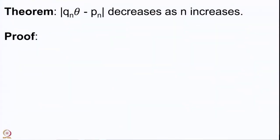So the real number θ can be expressed in terms of the complete quotient θₙ₊₁ using Pₙ, Pₙ₋₁, Qₙ, and Qₙ₋₁. This is something we will need when we go to the next result, which is that |Qₙθ - Pₙ| decreases as n increases. This is the result we now want to prove — it is one of the stepping stones towards proving that convergents give the best possible approximations.